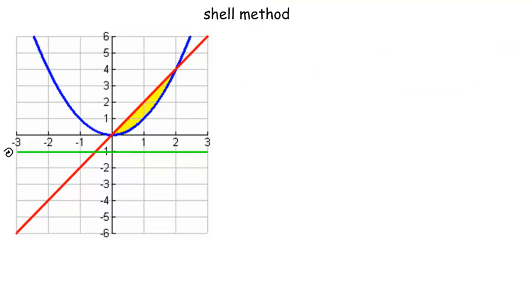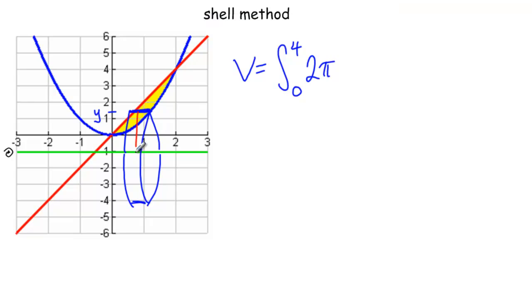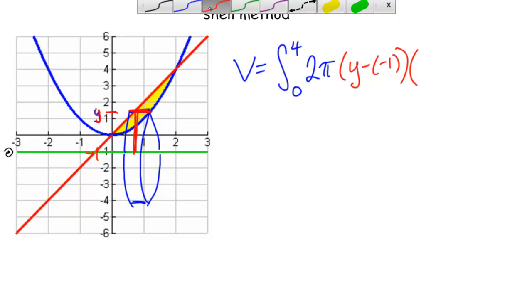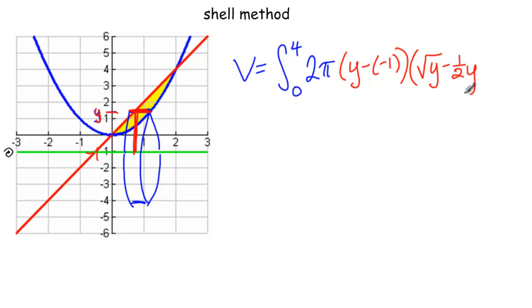Now let's find the same volume using the shell method. We cut parallel to the axis, giving horizontal rectangles, so we integrate in terms of y. Volume equals the integral from 0 to 4 — note there are no rectangles between negative one and zero, so we don't include that — of 2π times the radius. The radius is the distance from the slice at y down to the axis at negative one, so y minus negative one. Times the height, which is the same horizontal distance: square root of y minus one-half y, dy.